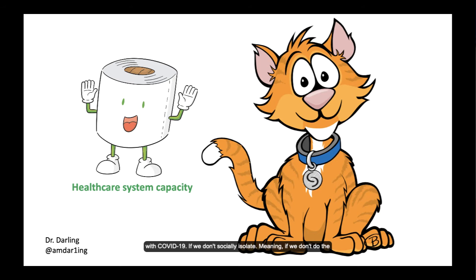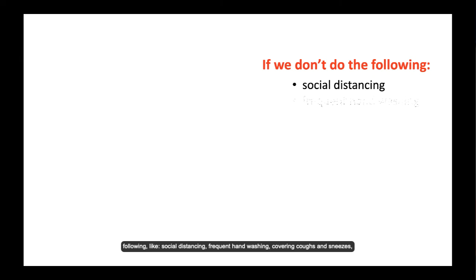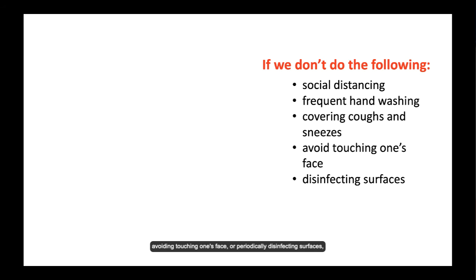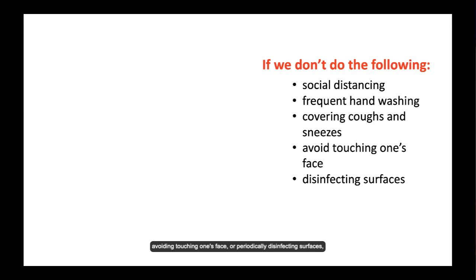If we don't socially isolate — meaning if we don't do the following like social distancing, frequent hand washing, covering coughs and sneezes, avoiding touching one's face, or periodically disinfecting surfaces — we get Kittyzilla. Kittyzilla means that the number of people who get infected all at one time is over maximum capacity. Kittyzilla will absolutely shred our healthcare capacity because we don't have enough ventilators, beds, or people to adequately care for everyone.